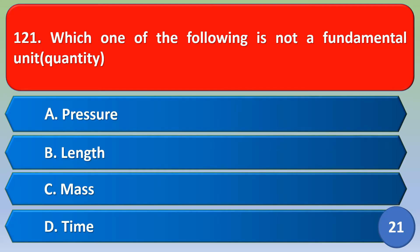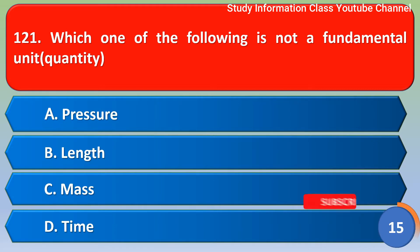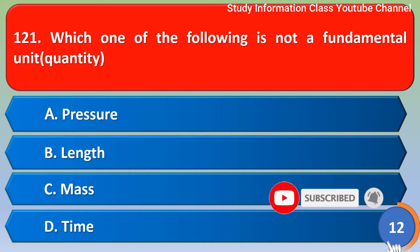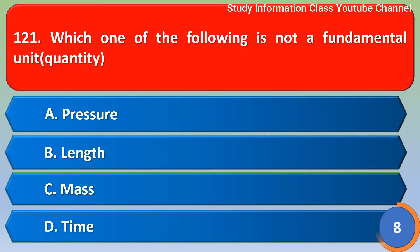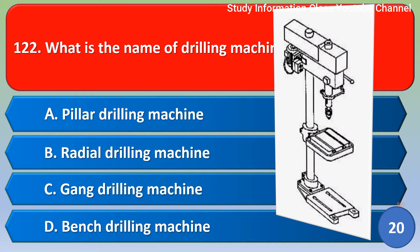Namaste, Jai Shri Ram. Which one of the following is not a fundamental unit? Option A: pressure, Option B: length, Option C: mass, Option D: time. The correct answer is Option A — pressure. Pressure is not a fundamental unit; the remaining options are fundamental units.